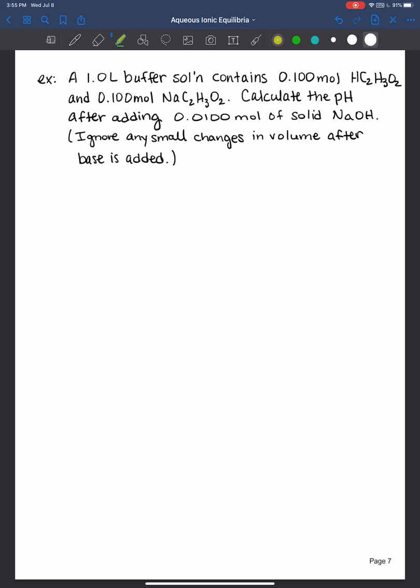First thing is first is to identify what you're adding. We're adding sodium hydroxide which is a strong base. And what part of the buffer does the sodium hydroxide want to react with? Does it want to react with acetic acid or sodium acetate? Good, it's going to want to react with the acid. Remember acids and bases react together. Two bases are not going to want to react with one another.